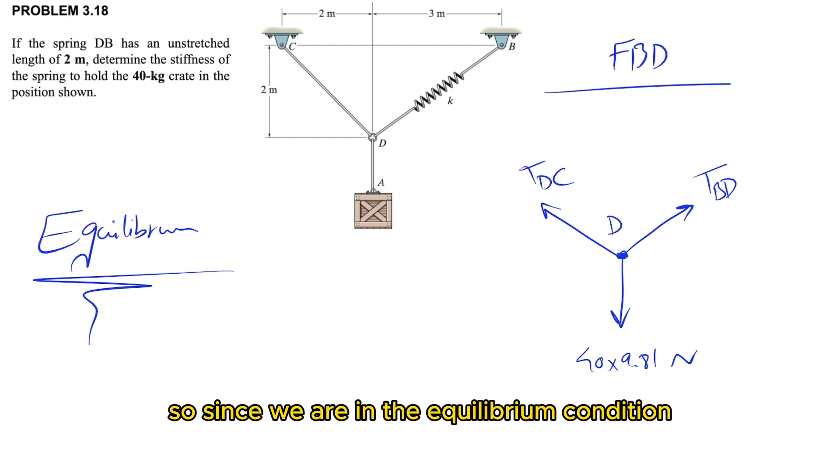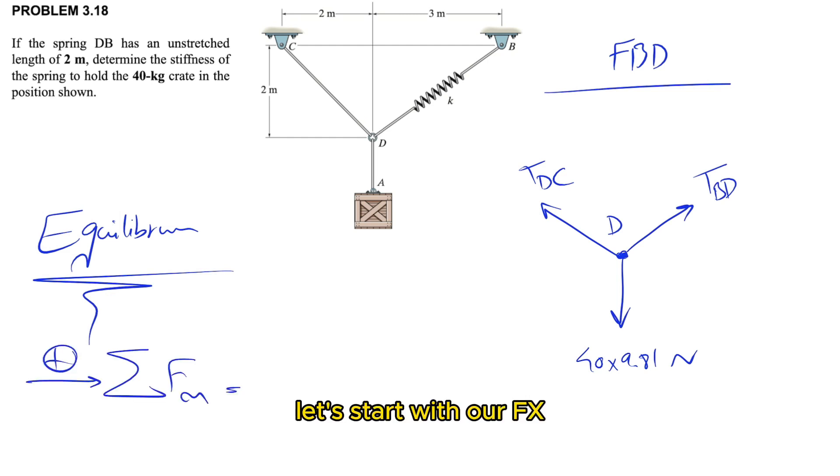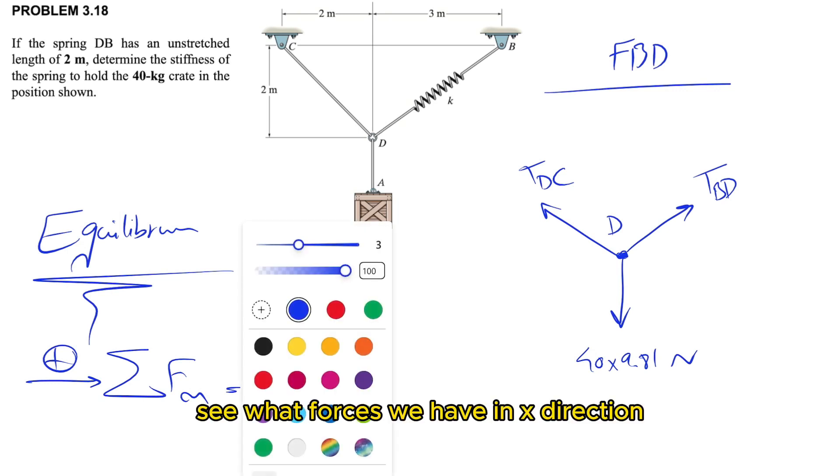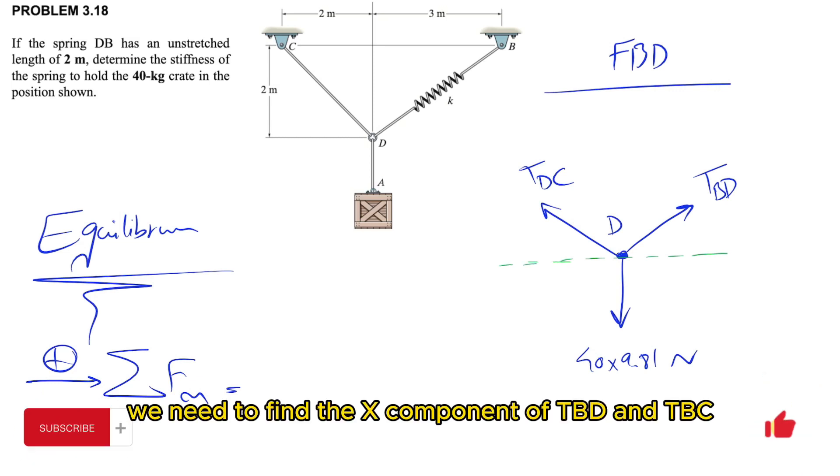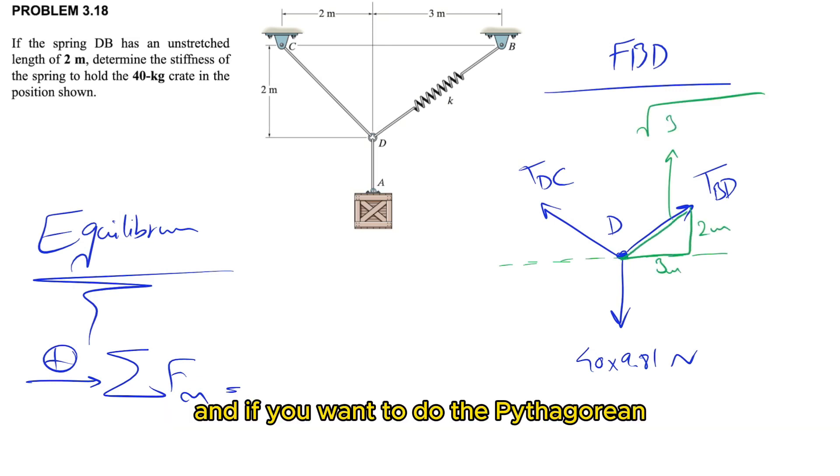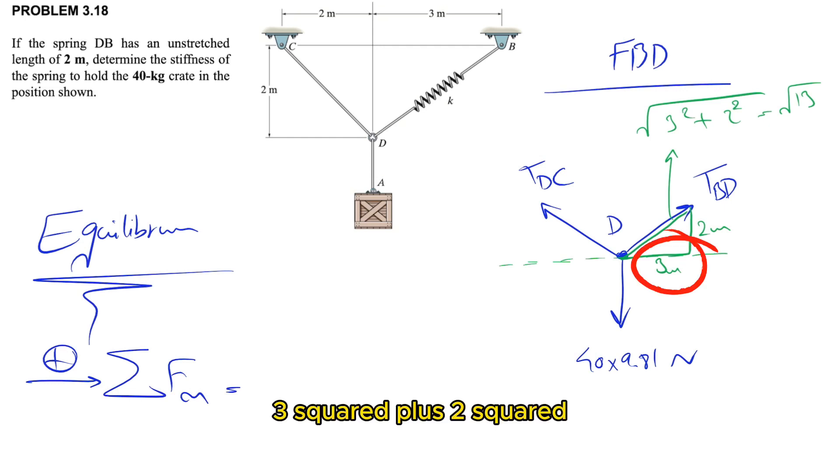Since we are in equilibrium, let's start with F_x. We need to find the x-components of T_BD and T_DC. Using the Pythagorean theorem to find the hypotenuse, we have square root of 3 squared plus 2 squared, which is square root of 13.